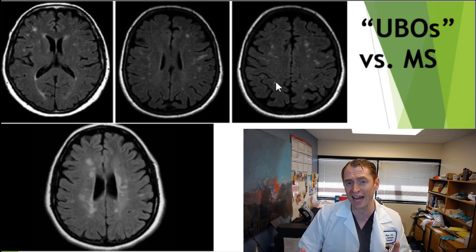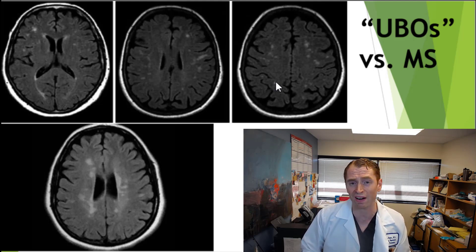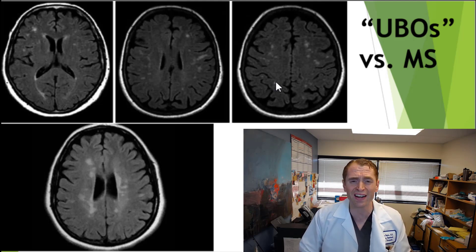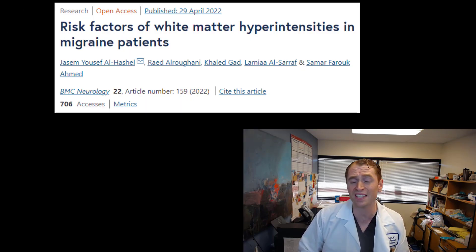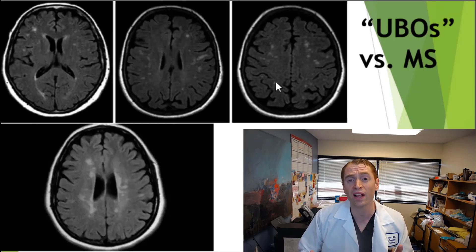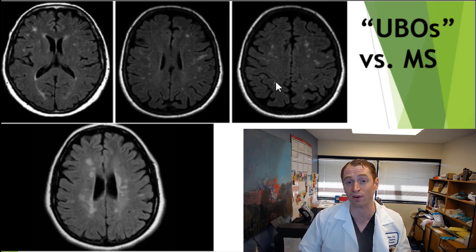There's evidence they're due to vascular disease. They're associated with vascular risk factors like diabetes, hypertension, smoking, and aging. They're also associated with migraine, and they're very common. This study found that 75% of people with chronic migraine have these UBOs. So people without MS are commonly misdiagnosed as having MS because they have an abnormal MRI.